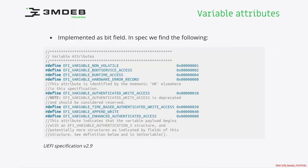There are some architecturally defined variables which have a special VendorGUID. In EDK2 source code, we can find it as the EFI global variable GUID, and we will discuss those architecturally defined variables later in the course. Here we would like to introduce attributes, which are responsible for indicating how the data variable should be stored and maintained by the system.